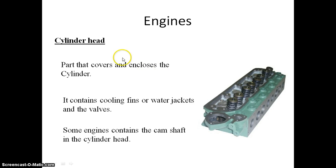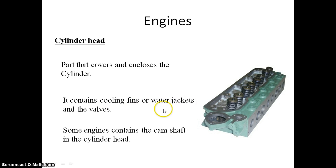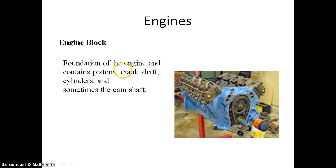The cylinder head, as the name suggests, is the covering part of the cylinder — the cylinder cover. It contains the cooling fins, water jackets, and the valves. The engine block is the whole structural system — the foundation of the engine — and it contains the piston, crankshaft, and cylinders. Everything is included in the engine block.